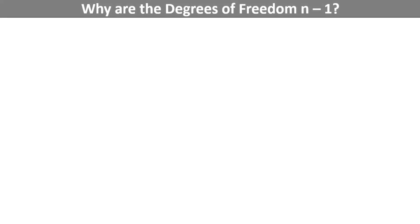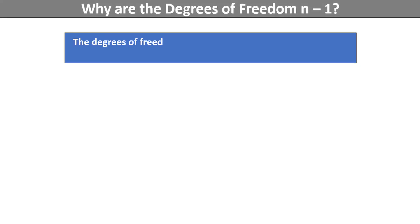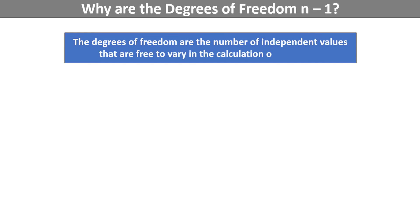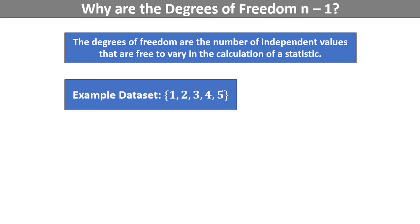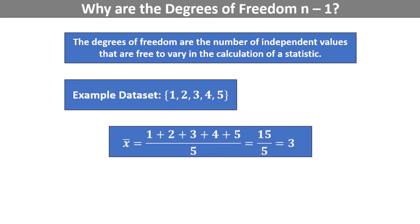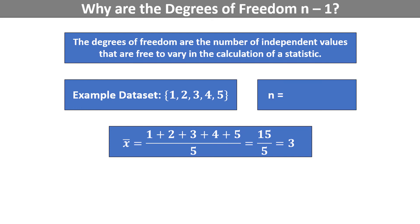We stated that the degrees of freedom determine the shape of the t-distribution and are equal to n-1. But why n-1? The degrees of freedom are the number of independent values that are free to vary in the calculation of a statistic. To give a quick example, if this is our data set, the sample mean is (1+2+3+4+5)/5, which is 15/5 and equals 3. The sample size n is 5, and the degrees of freedom are n-1, which is 4.